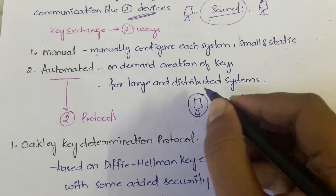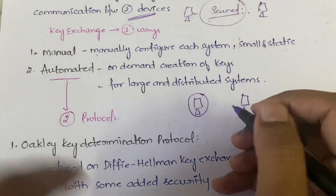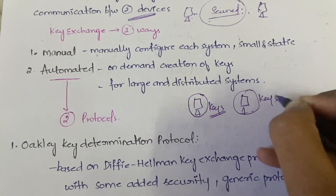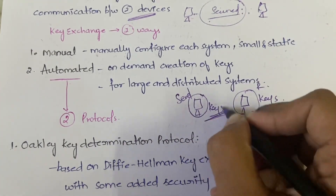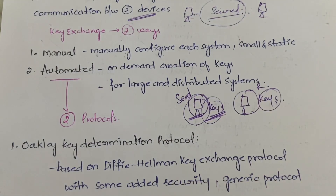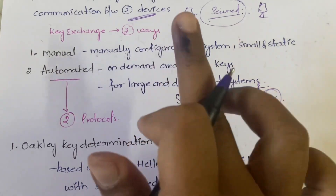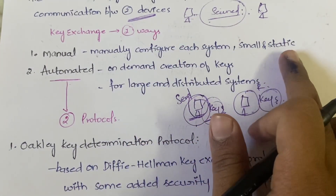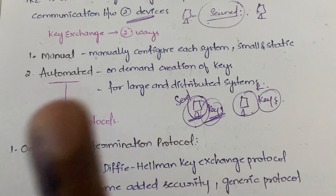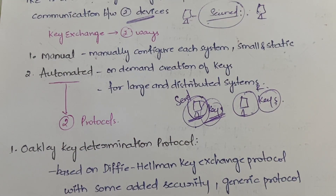In manual key exchange, the system administrator will manually configure the system with the keys of the sender and the keys of the receiver, so the system is ready to communicate. This manual key exchange process is suitable for small and static systems — that is, communication between just two or three people where the communication is also static.